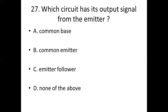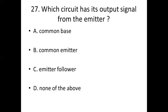Question 27: Which circuit has its output signal from the emitter? Option A: common base. Option B: common emitter. Option C: emitter follower. Option D: none of the above. Answer: Option C — emitter follower.